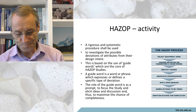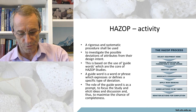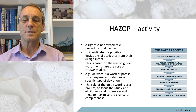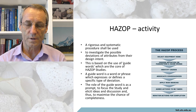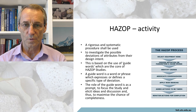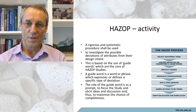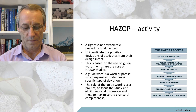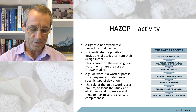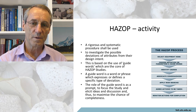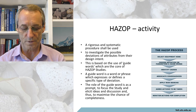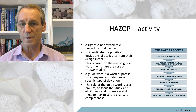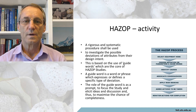The activity: a rigorous and systematic procedure shall be used to investigate the possible deviations of attributes from their design intent. Essentially, you look at some component in the architecture, determine what it should do, then look at the guide words to see if this thing can get it wrong. A guide word is a word or phrase used to describe deviations from the circumstances the component is designed for. The role of the guide word is to prompt and focus the study, not to compel — it's possible to say, well, that's ridiculous.